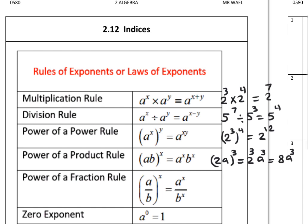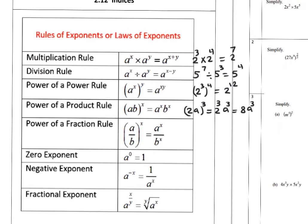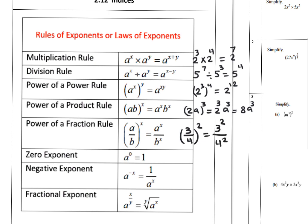Power of fraction rule: if we have (a/b)^x, distribute the power to get a^x over b^x. For example, (3/4)^2: distribute the power to get 3^2 over 4^2. 3^2 is 9, and 4^2 is 16, so the answer is 9 over 16.